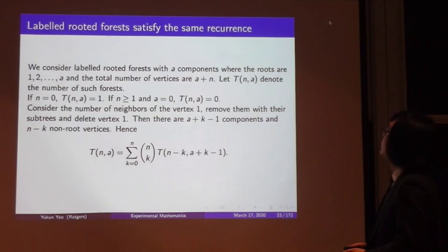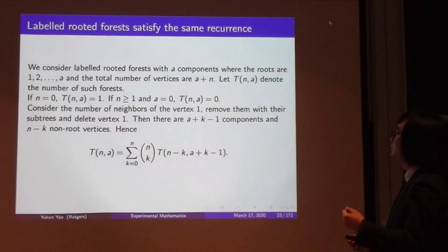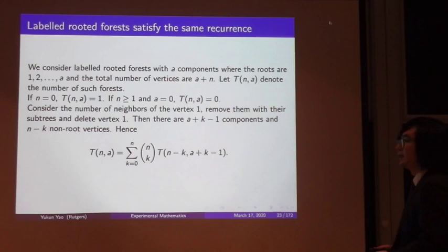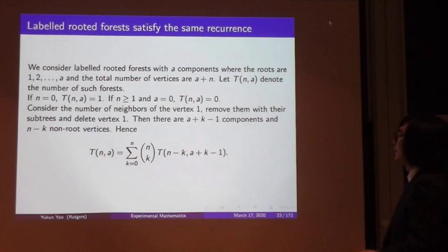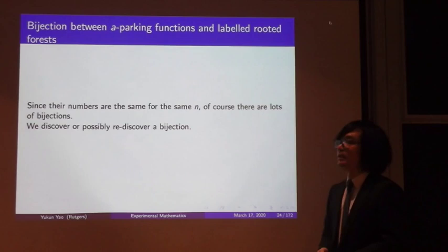We now look at another combinatorial object: labeled rooted forests. Consider labeled rooted forests with a components, where the roots are from 1 to a and the total number of vertices is a+n. Let t(n,a) denote the number of such forests. Checking the initial condition, t(n,a) agrees with p(n,a). Considering the number of neighbors of vertex 1, removing them with their sub-trees and deleting vertex 1 gives a+k-1 components and n-k non-root vertices, yielding the same recurrence. Hence t(n,a) = p(n,a).